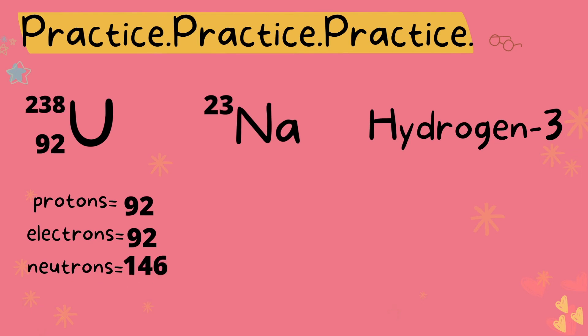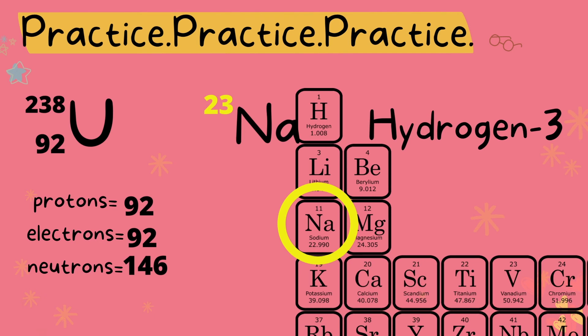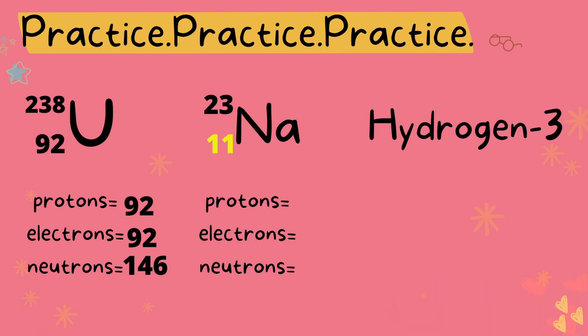Next we have sodium and the mass number is given but we're missing the atomic number. Simply we look at the periodic table, find sodium, and see that the atomic number is 11 given here. Keep in mind if you were to get a problem that looks like this you will likely be given a part of the periodic table to find the atomic number. Atomic number is not something you are expected to memorize. Okay so we have 11 protons, 11 electrons, and 12 neutrons.